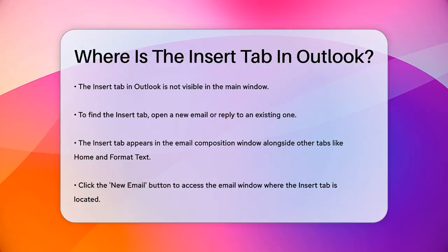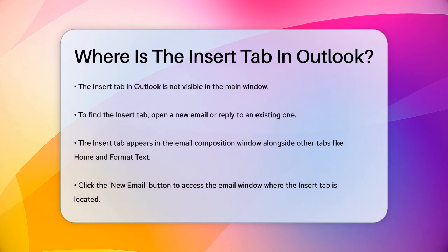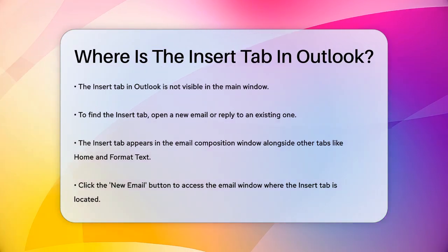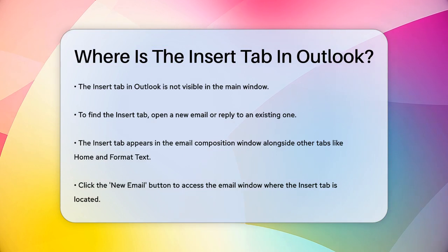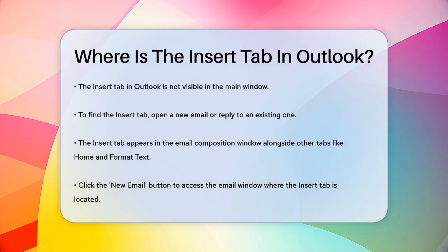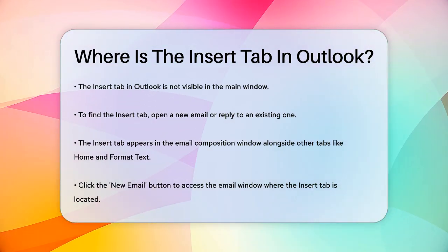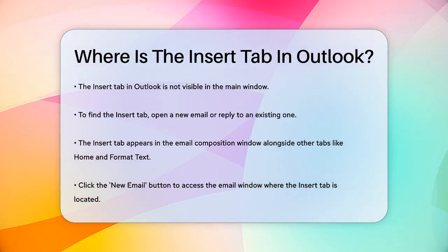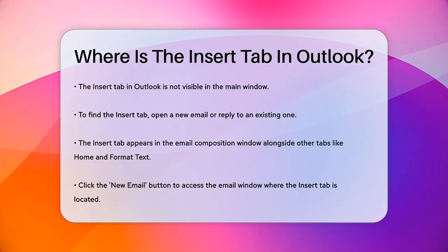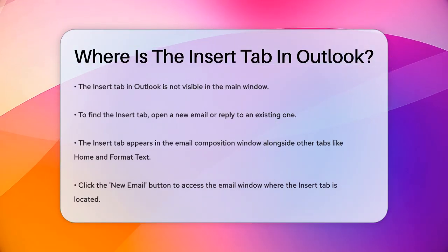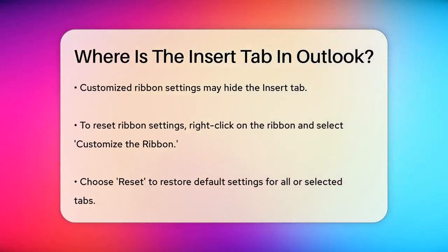Let's start by understanding where you should be looking. The Insert tab is not visible in the main Outlook window. Instead, you need to open a new email or reply to an existing one. Once you're in the Email Composition window, you'll see the Insert tab appear along with other tabs like Home, Send Receive, and Format Text.